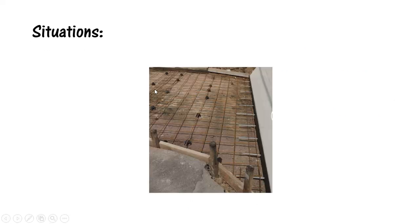As shown on screen, the layback is provided where an existing layback was present. A cover of 50mm SL82 mesh is used, and then a 10mm diameter dowel, 350mm long, is provided to create a rigid connection support at the end of the layback.